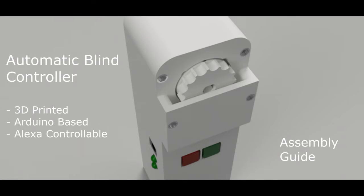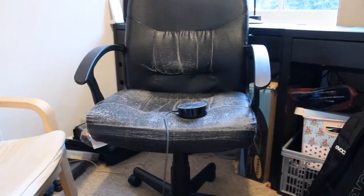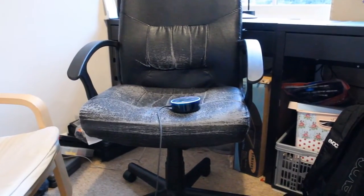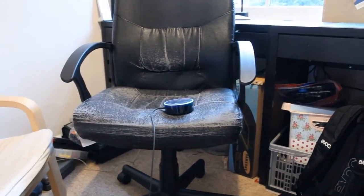This is the assembly guide to my automatic blind controller, which is a 3D printed, Arduino-based, and Alexa controllable device. Echo, turn off the office blinds. I'll upload a separate video showing how to set it up using Alexa.